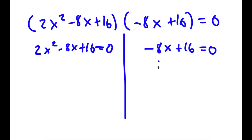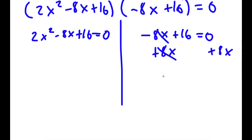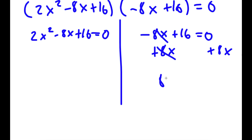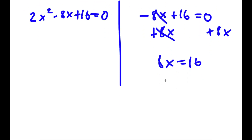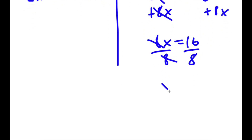For negative 8x plus 16 equals 0, I add 8x to both sides so these cancel, giving 8x equals 16. Dividing both sides by 8, I get x is equal to 2.